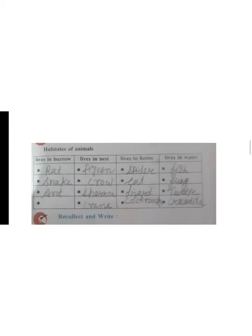Now, habitats of animals. Which animals are where? Leaves in burrow - burrow means hole. Rat, snake, ant, black ant, all these animals are in burrows. Leaves in nest, which animals are there? Pigeon, crow, sparrow and crane.